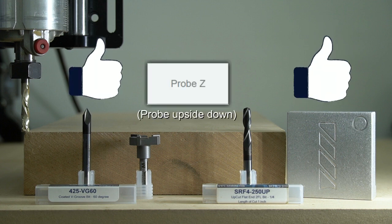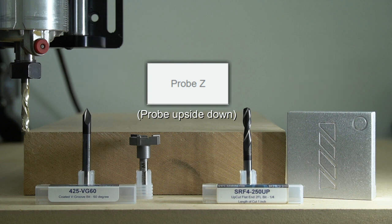Even though the two bits on the left cannot be probed for X and Y using the probe, you can probe Z using all three of these bits. One can still probe for Z by flipping the probe upside down and probing inside of the recessed area.